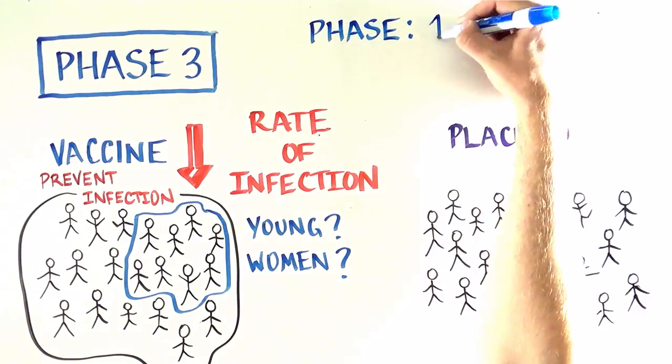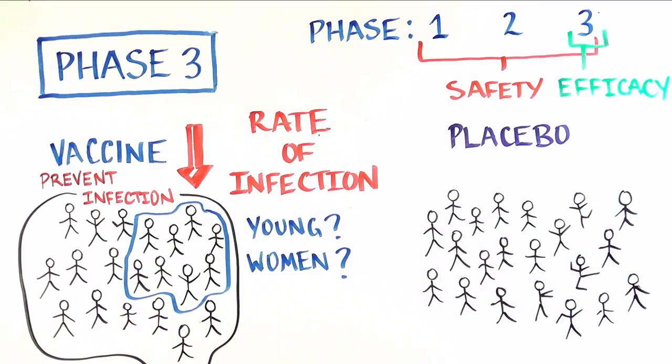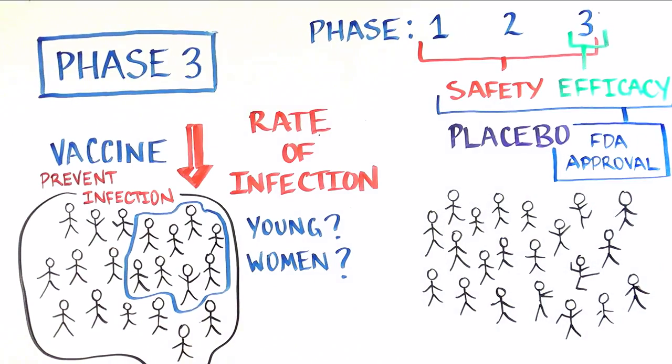Along with the safety data that is collected in all phases of vaccine studies, this efficacy data is used by the FDA to decide if the vaccine should be licensed and, if so, for whom it is recommended.